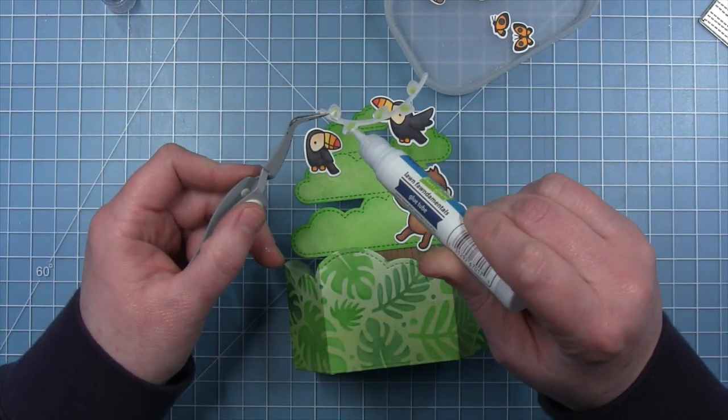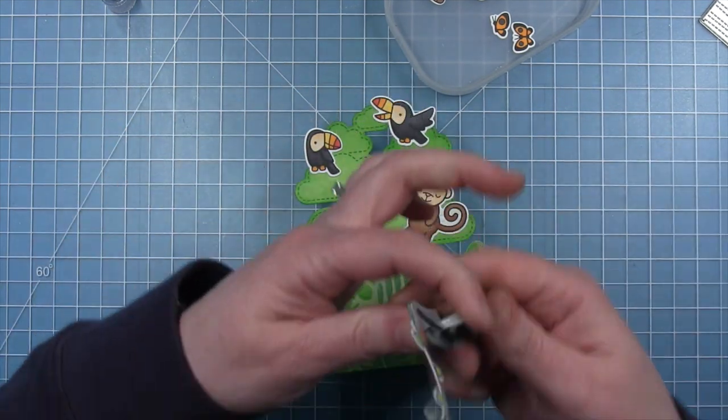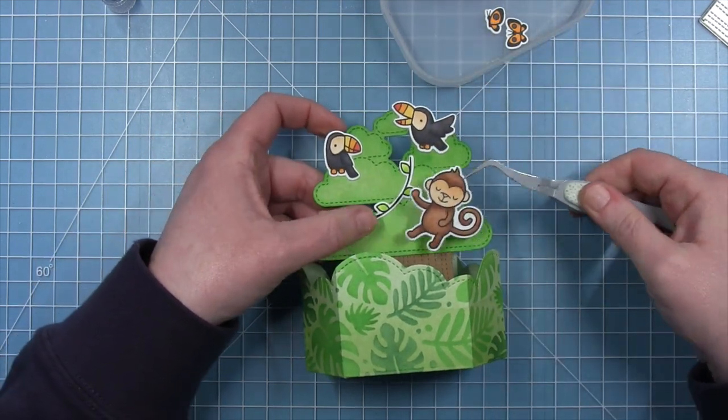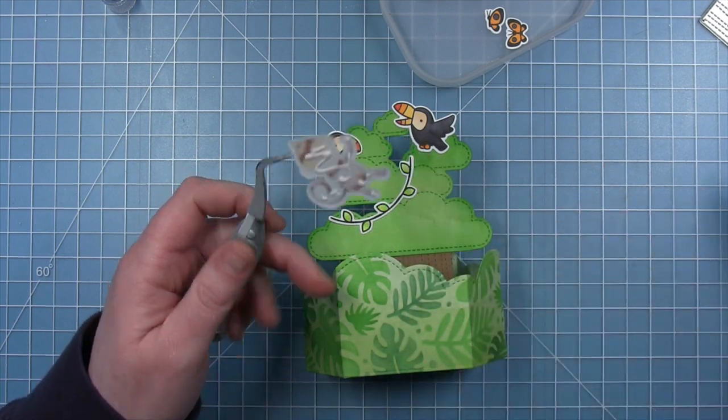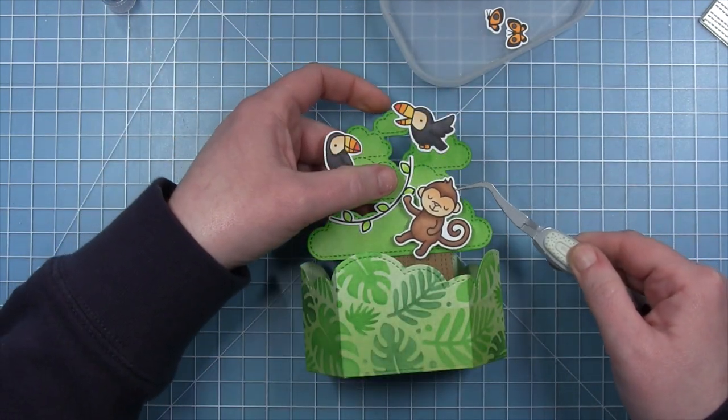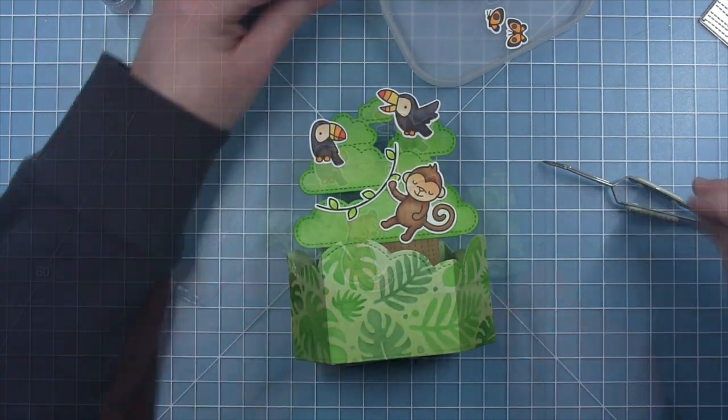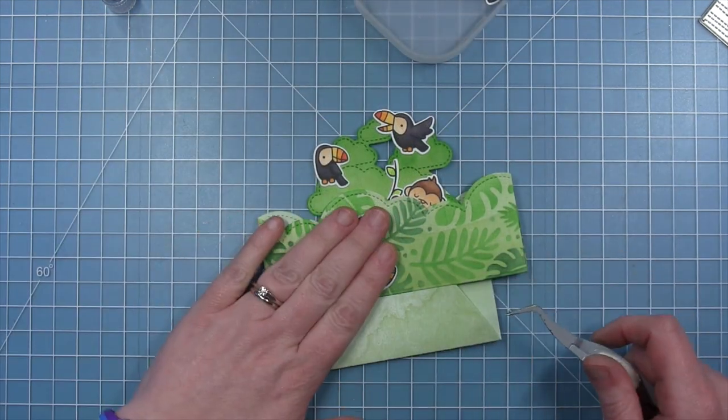And then I have the vine from Critters in the Jungle, which I think makes this tree look even more like it's in the jungle and it gives my little monkey a place to hold on to. Now I did end up cutting another vine and you'll see me add that here in a little bit that's going to drape down towards the trunk of the tree.